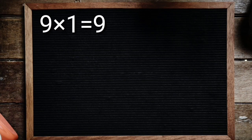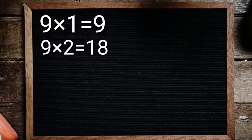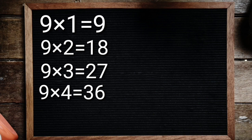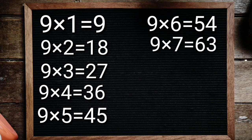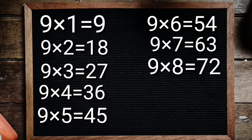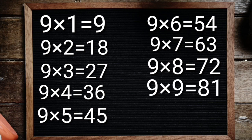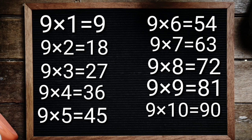9 1's are 9, 9 2's are 18, 9 3's are 27, 9 4's are 36, 9 5's are 45, 9 6's are 54, 9 7's are 63, 9 8's are 72, 9 9's are 81, 9 10's are 90.